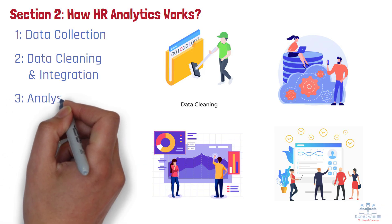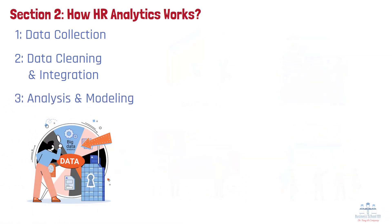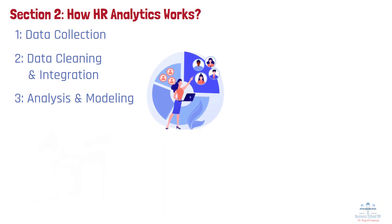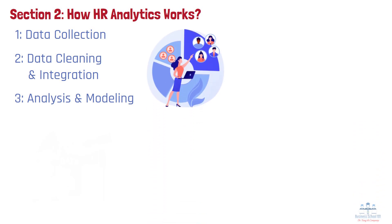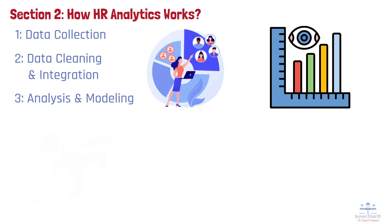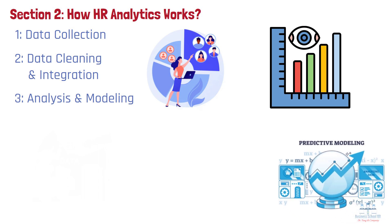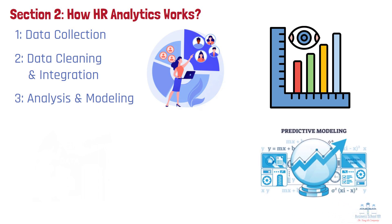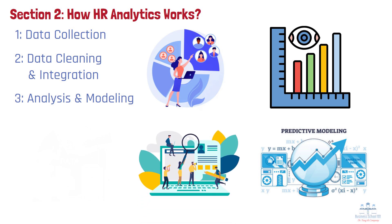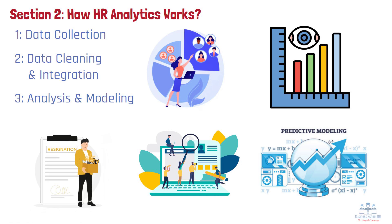Step 3: Analysis and modeling. With accurate data in place, HR analysts begin exploring it using statistical techniques, visualization tools, and predictive models. This step is where patterns and trends begin to emerge. Descriptive analytics might reveal where productivity is highest or where absenteeism is spiking. Predictive models, such as regression analysis or machine learning algorithms, can be used to identify factors that contribute to turnover, forecast future hiring needs, or assess the potential success of a candidate based on past hiring data. For example, analysis may show that employees who don't receive feedback within their first 90 days are more likely to resign, prompting action in performance management practices.